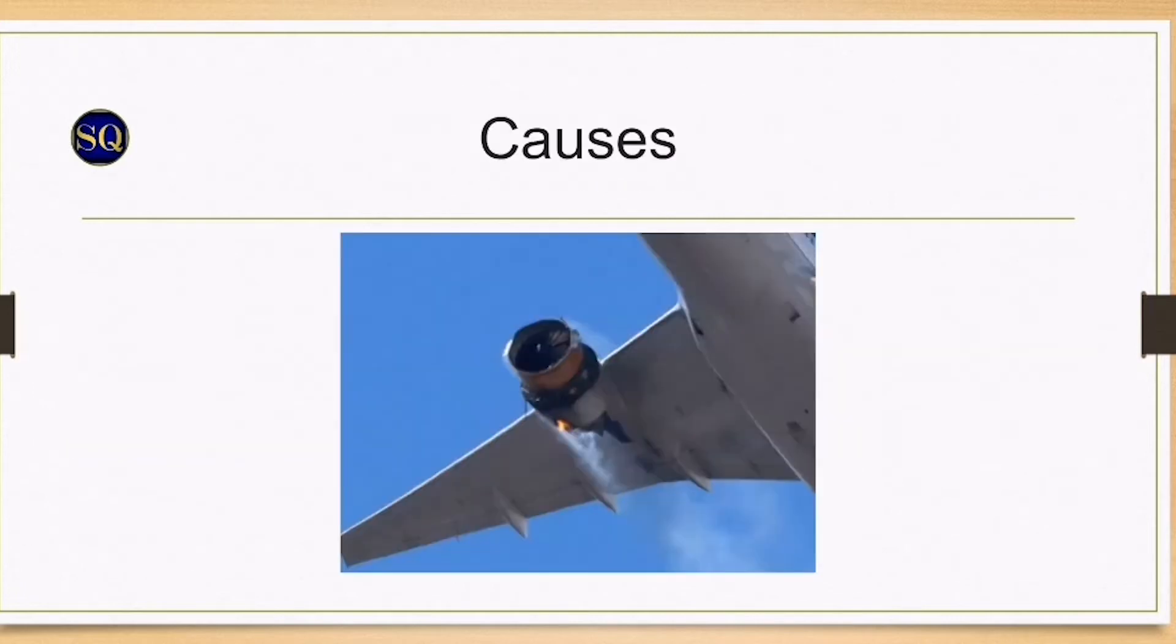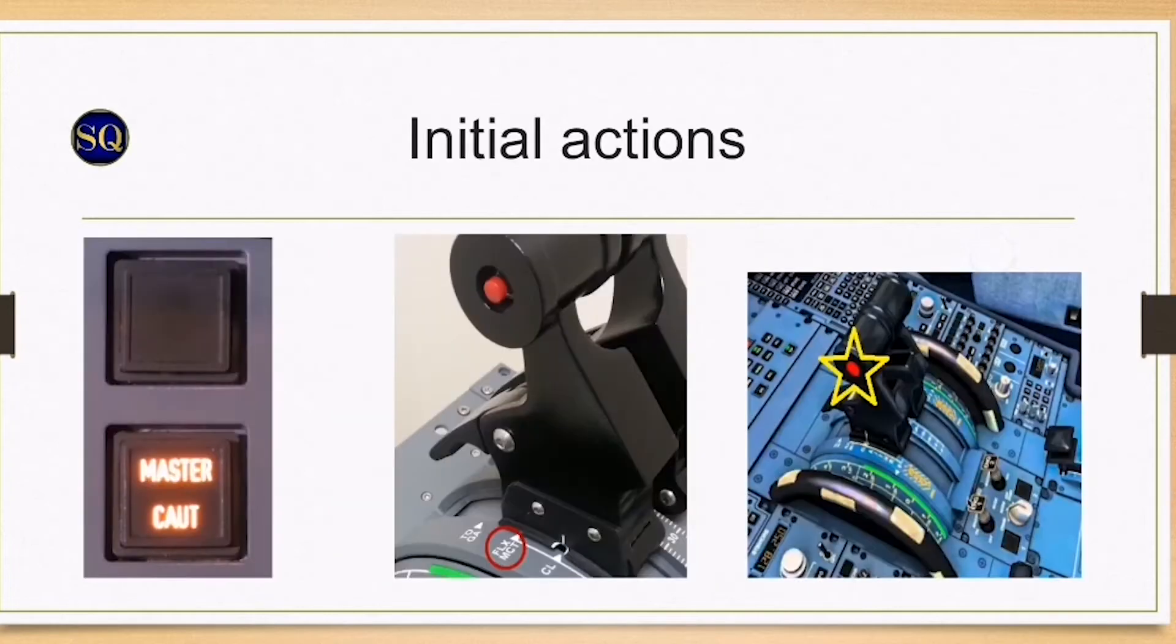Let's dive into the causes. An engine failure may result from mechanical failure, fuel starvation or contamination, or an engine flame out. As soon as an engine failure is recognized, cancel the caution. The pilot flying will set maximum continuous thrust MCT on both engines and disconnect the autothrust via instinctive disconnect button.